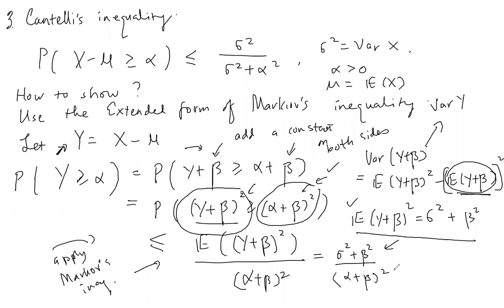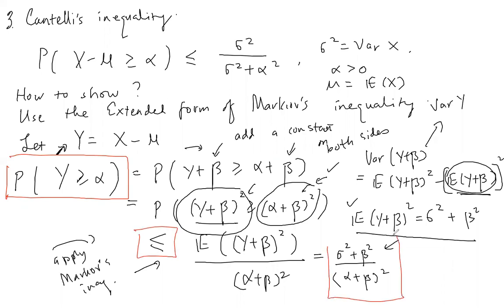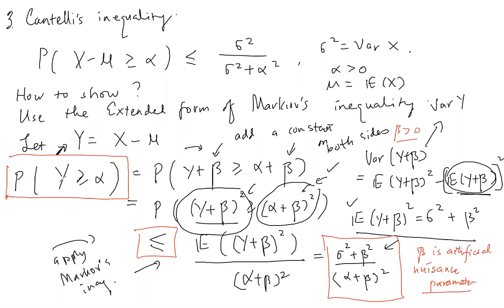Now beta is an artificial nuisance parameter introduced for intermediate work. Since we have P(Y ≥ alpha) ≤ (sigma² + beta²)/(alpha + beta)², we need to choose beta to make this bound as small as possible — a bound that is very large is basically useless.